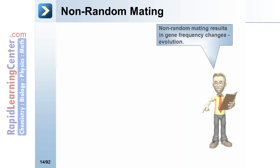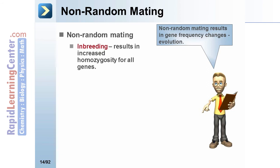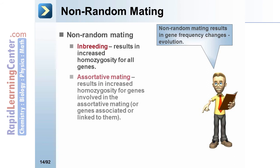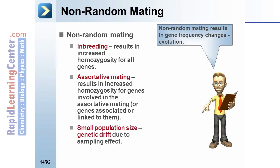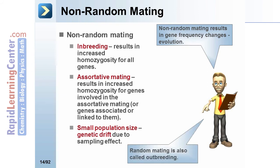Nonrandom mating results in gene frequency changes leading to evolution. Inbreeding results in increased homozygosity for all genes. Assortative mating results in increased homozygosity for genes involved in the assortative mating, or genes associated or linked to them. Small population size leads to genetic drift due to the sampling effect. Random mating is also called outbreeding.